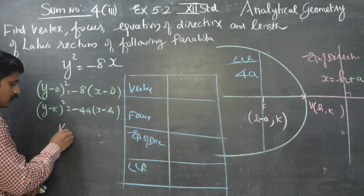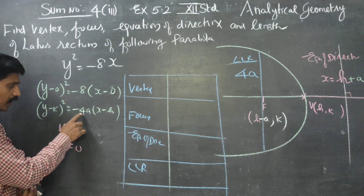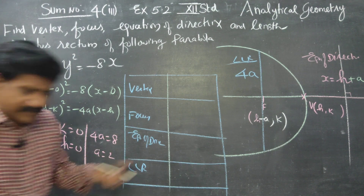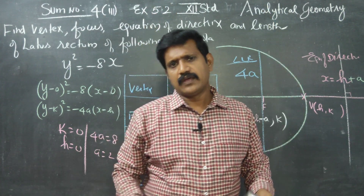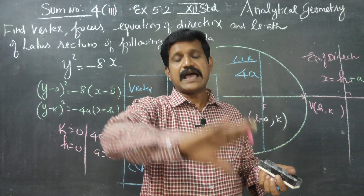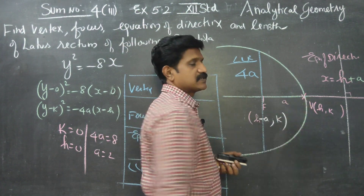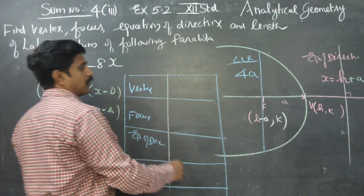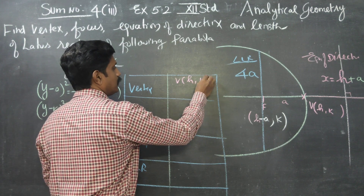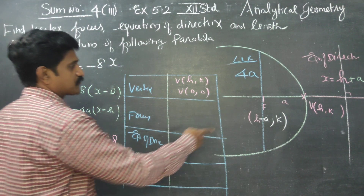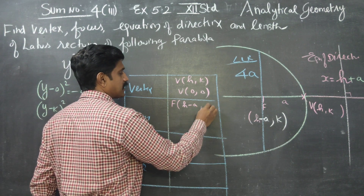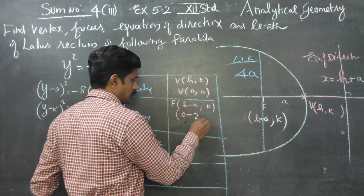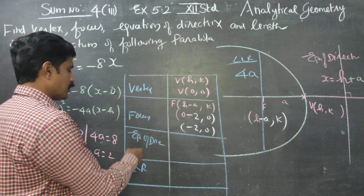From matching: K equals 0, H equals 0, and 4A equals 8, therefore A equals 2. Note that A is always positive since it represents the distance between the vertex and focus. So the vertex is (H, K) = (0, 0), and the focus is (H minus A, K) = (0 minus 2, 0) = (minus 2, 0).